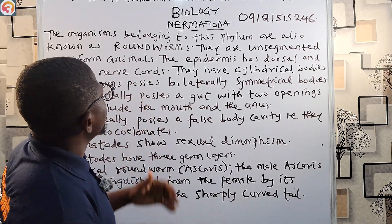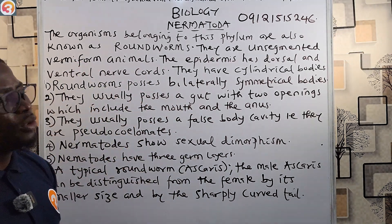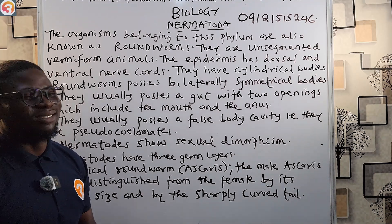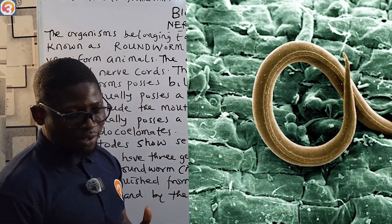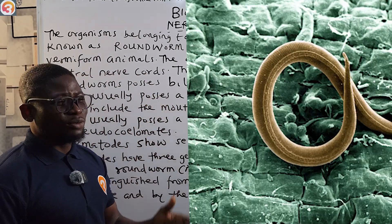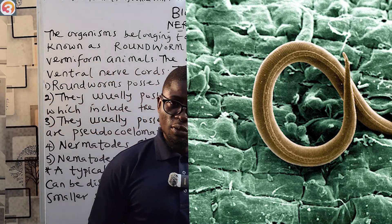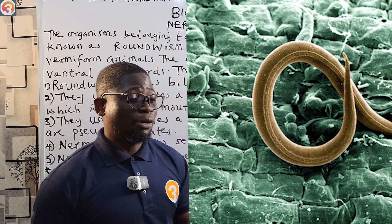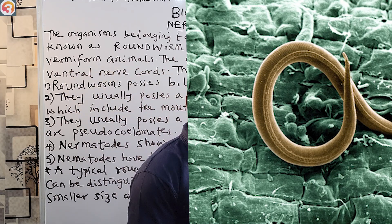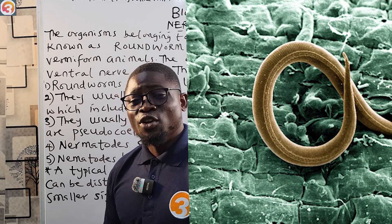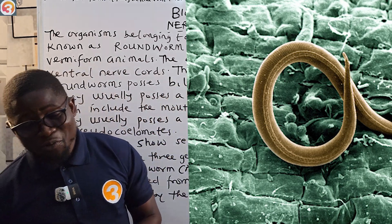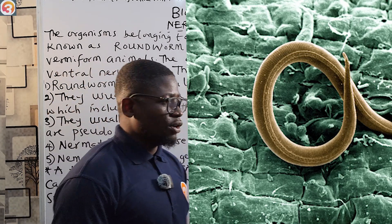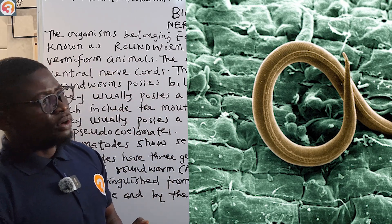Organisms belonging to the phylum Nematoda are also known as roundworms. There are up to 28,000 species of nematodes in the world, and among those 28,000 species, over 16,000 of them are parasitic.